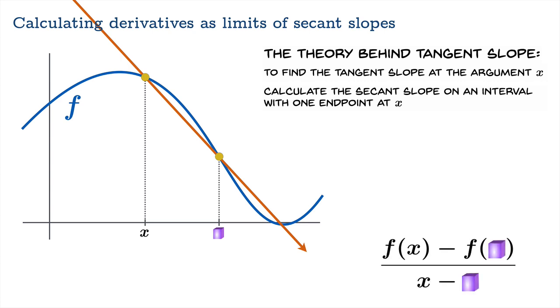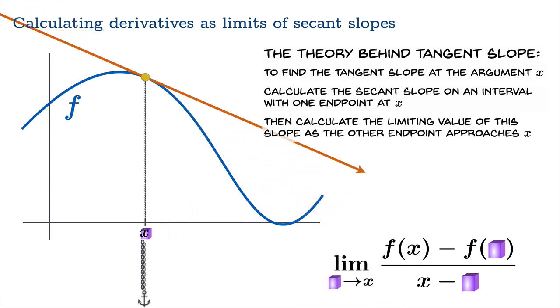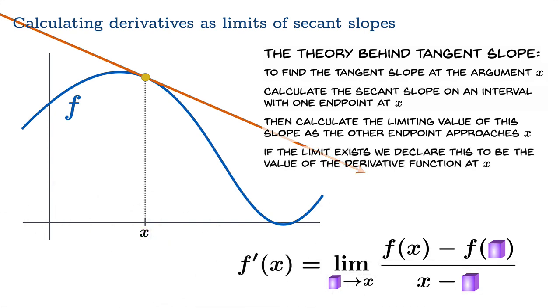We need to calculate this secant slope and then we're going to calculate the limiting value of this slope as the other endpoint approaches x. Now it's important to remember what's anchored in this limit. x is where we care about and that's not going to change during the limit. What we need to do is look at the limit as the other argument approaches x. And if that limit exists, we declare this number to be the value of the derivative function at x.